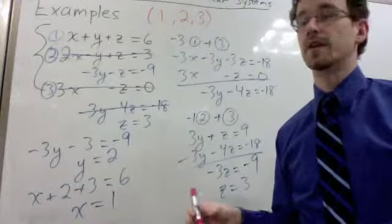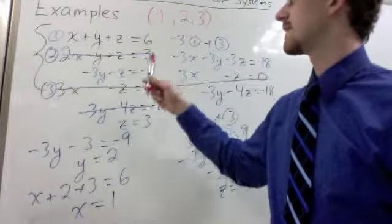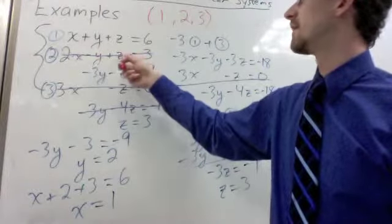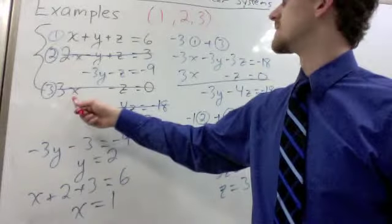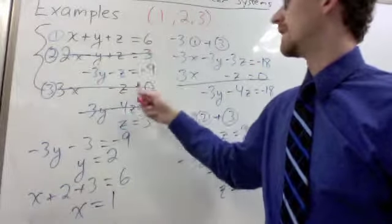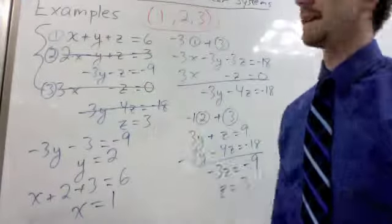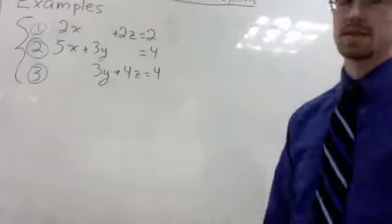So now we have solved for all three variables, and we can write our solution as an ordered triple: x is 1, y is 2, z is 3. And we always want to go back and check our answer. 1 plus 2 plus 3 is 6, that's good. 2 times 1, 2, minus 2 is 0, plus 3 is 3, that's good. 3 times 1 is 3, minus 3 is 0, that's good. So that solution checks out. That is the solution to our system.